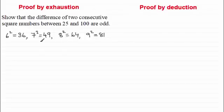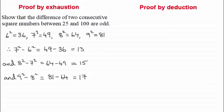Now all we need to do is subtract consecutive square numbers. So if we do 7 squared minus 6 squared for instance, you can see that gives us 13, and then 8 squared minus 7 squared is 15, and 9 squared minus 8 squared is 17. All three of these answers are odd.